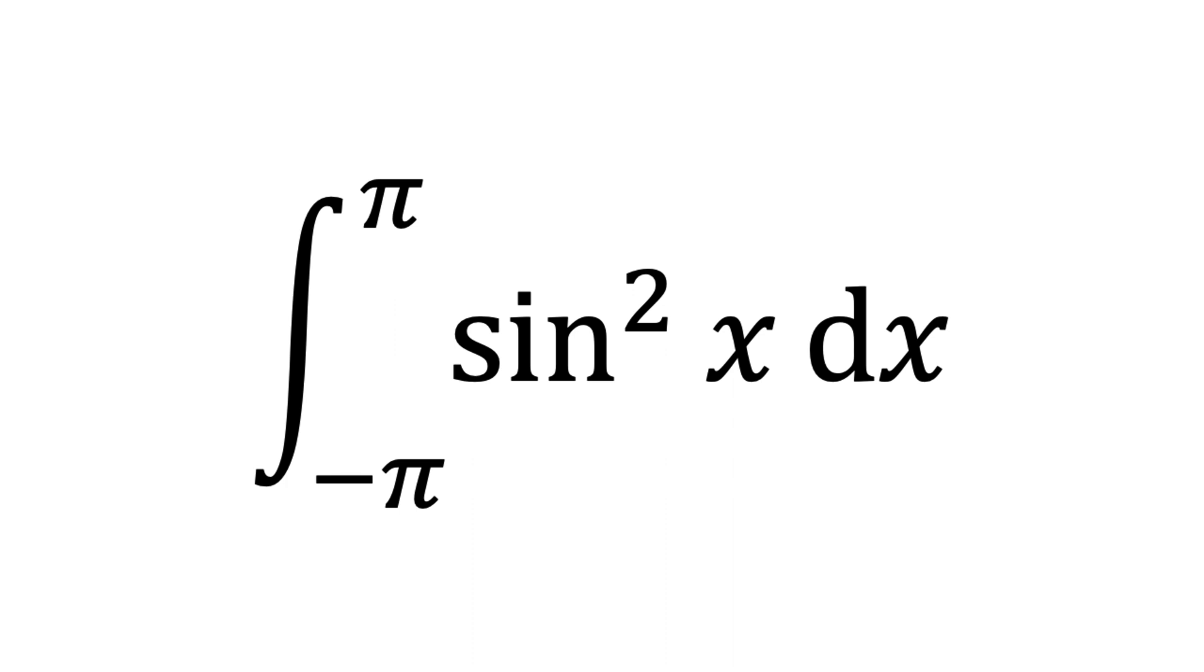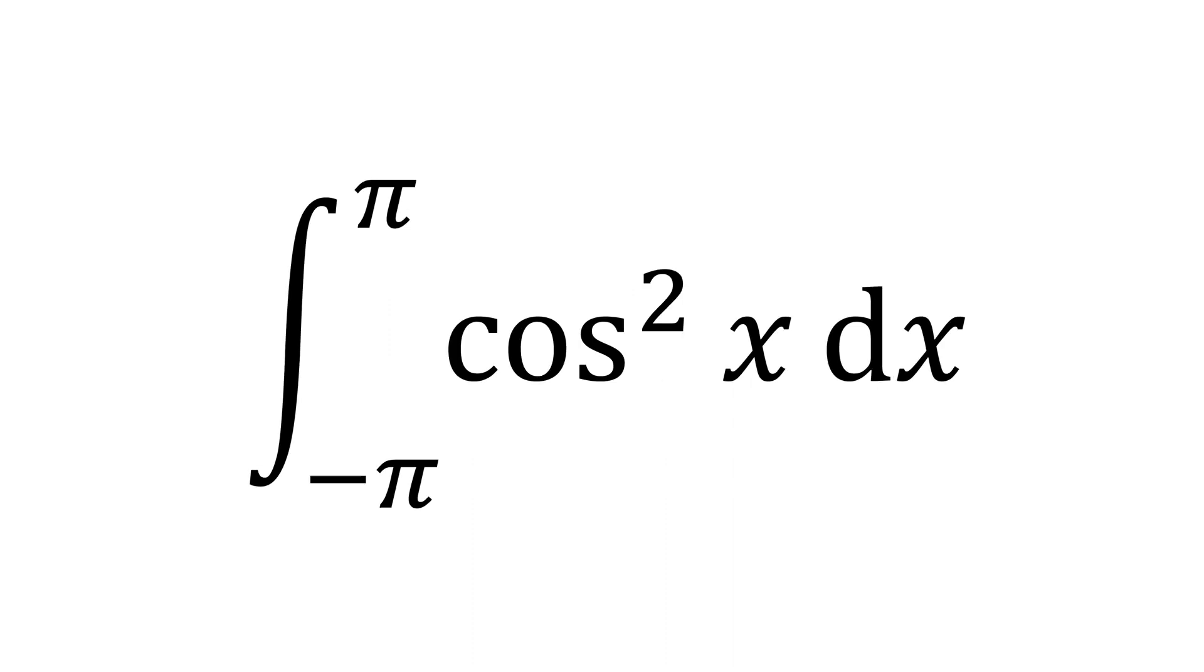To integrate sin square x over dx from minus pi to pi, I will use cos square x over dx from minus pi to pi as a counterpart. This will make a shortcut.